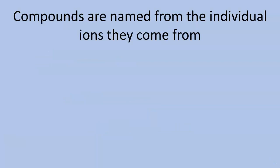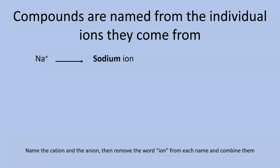Compounds are named from the individual ions they come from, so you're going to name the cation and the anion from each name and combine them. Very simple. So what do we have here? We have a sodium ion, we have a chloride ion. If we go ahead and just get rid of the word ion, we end up with NaCl, which is sodium chloride.